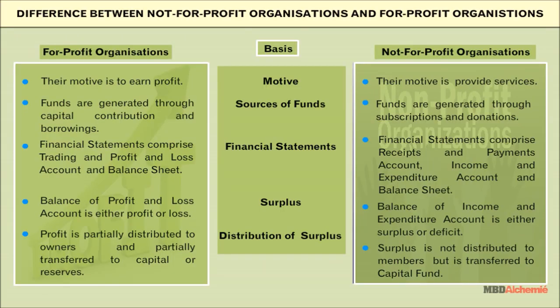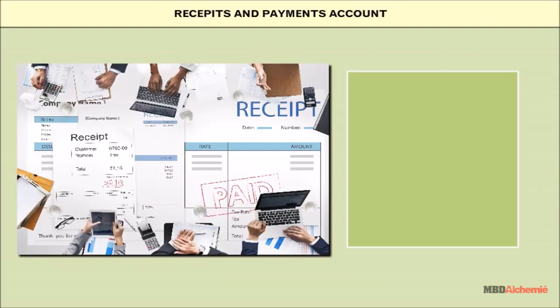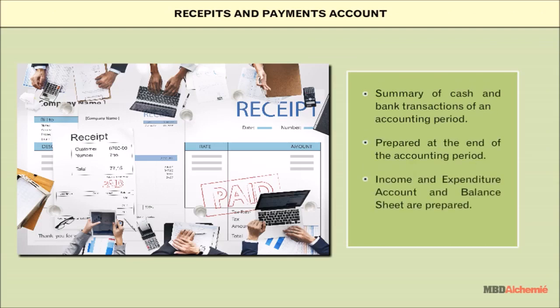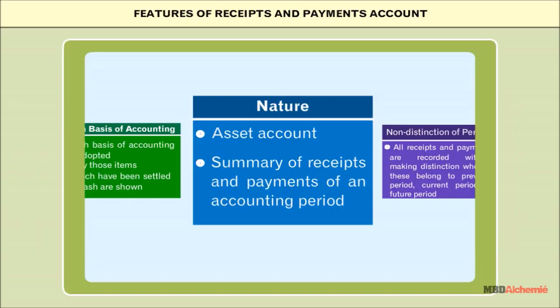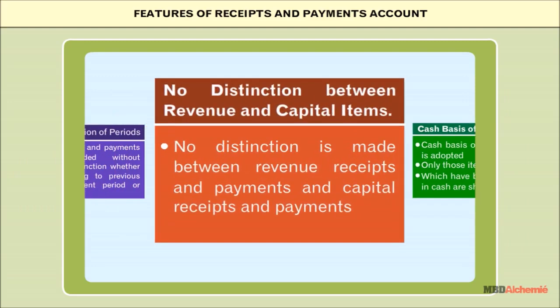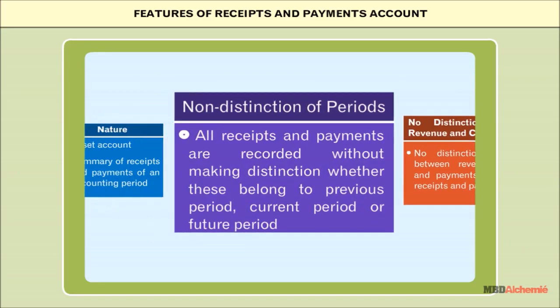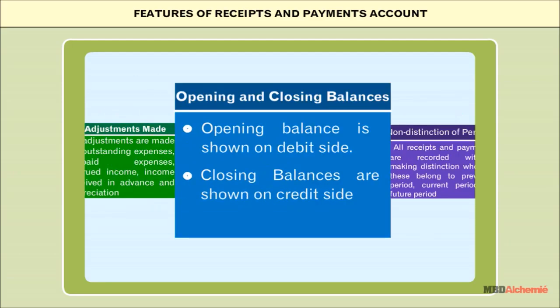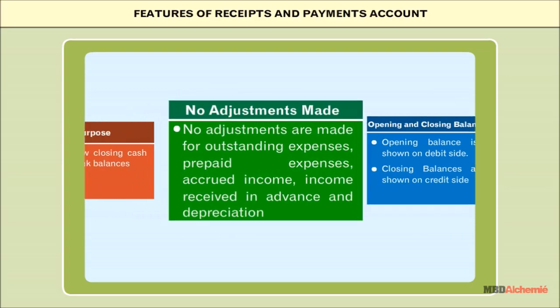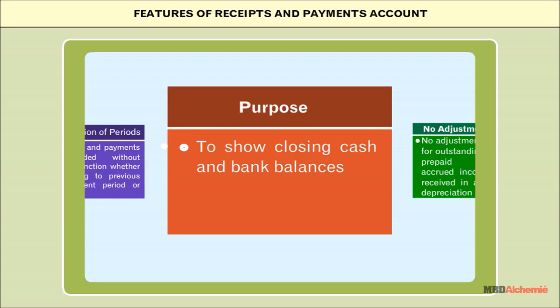We will also cover the difference between not-for-profit organizations and for-profit organizations. The receipts and payments account is a summary of cash and bank transactions of an accounting period. It is prepared at the end of the accounting period, and income and expenditure account and balance sheet are prepared on its basis. Features include: it is an asset account, based on cash, with no distinction between revenue and capital items, non-distinction of periods, opening and closing balances, and no adjustments made.